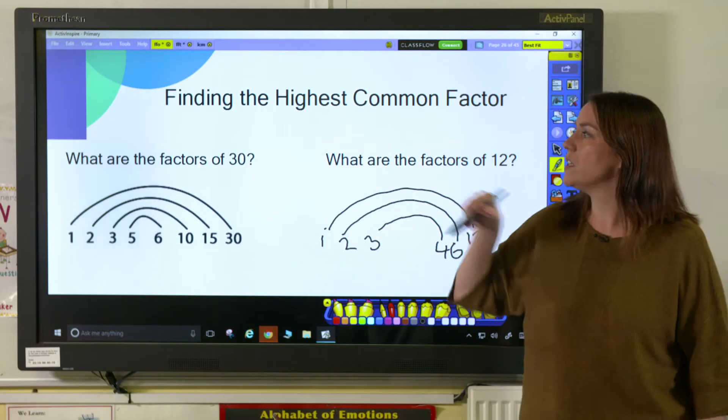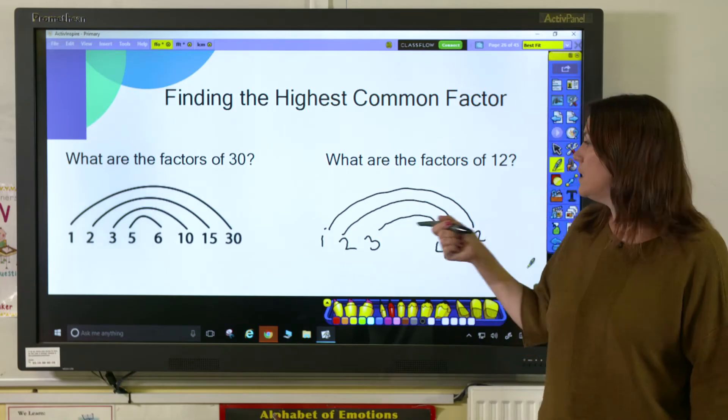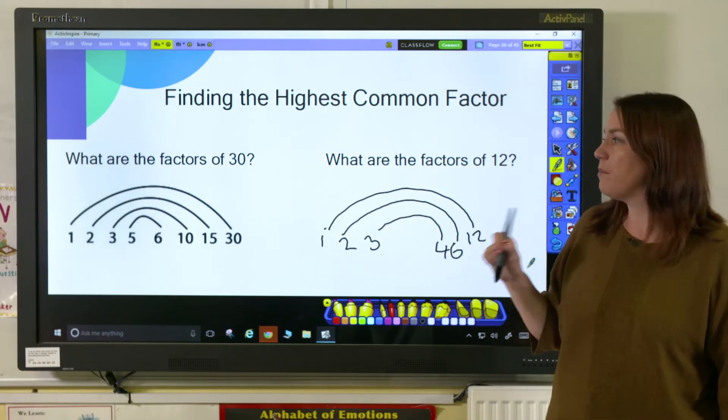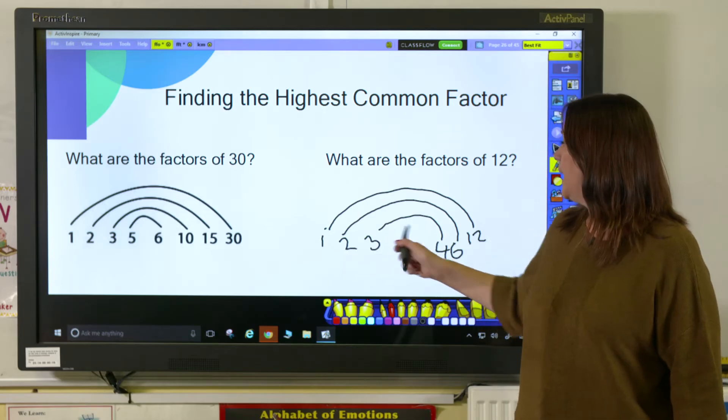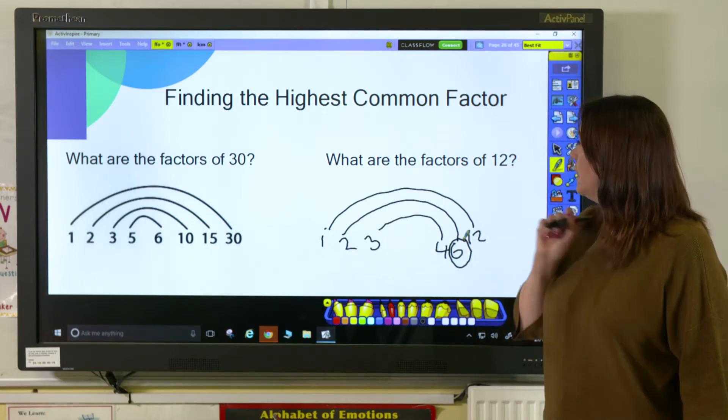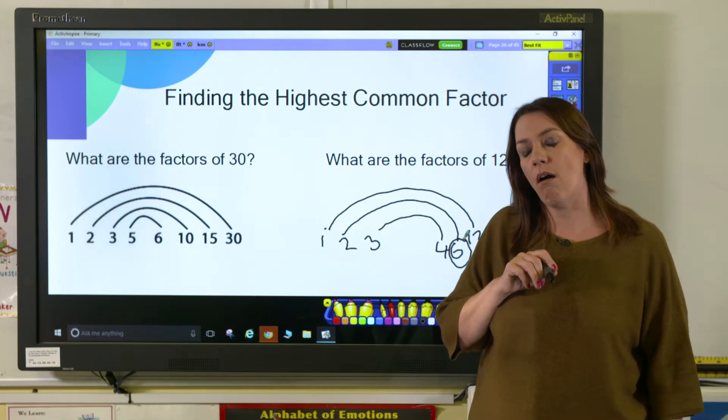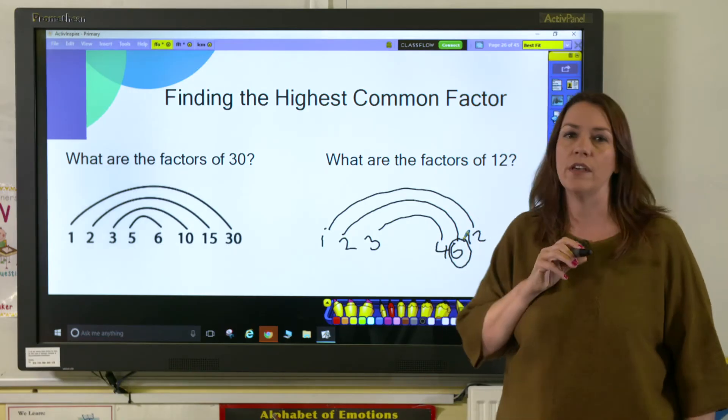Now here I also have the factors of 30, and you can see that some of them are common. They both have 1, 2, 3, and 6 as factors, so we can say that the highest common factor of 12 and 30 is 6.